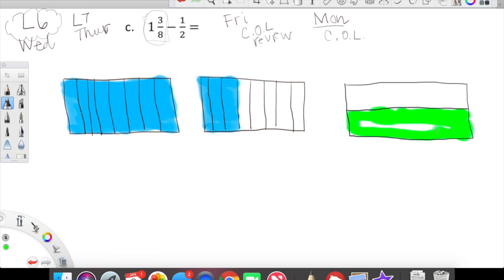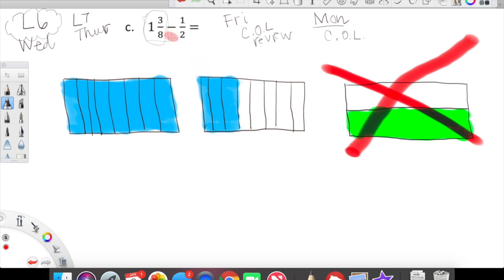We have in blue our one and three eighths. Now, typically we would introduce our second fraction. Our second fraction, we're taking away one half. The denominator in one half is two, so we would have two rows. Here's the interesting twist with lesson six. We actually don't even need to introduce this second model because we're not adding one half. What we're doing is taking away one half.